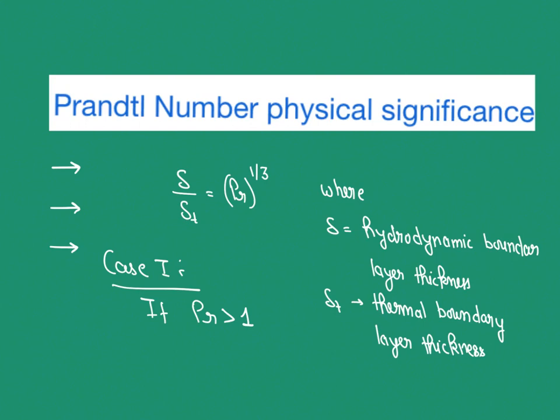Alternatively, when momentum diffusivity is higher than thermal diffusivity, the distance a fluid needs to fully develop its velocity boundary layer is less than the distance needed for the thermal boundary layer to fully develop. For Pr = 1, both boundary layer thicknesses are equal. For Pr < 1, thermal diffusivity dominates, meaning conduction dominates over convection.